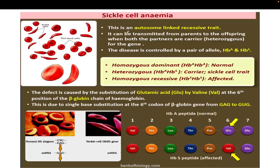Sickle cell anemia is an autosomal linked recessive trait (unlike hemophilia and color blindness which are sex-linked recessive). It can be transmitted from parent to offspring when both partners are carriers. It can also be transmitted when both parents are in the recessive condition. Homozygous dominant individuals are normal.